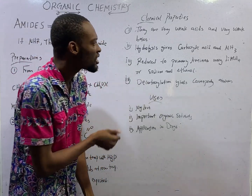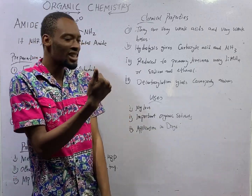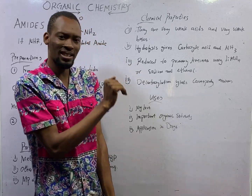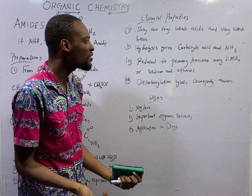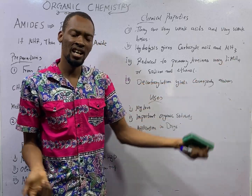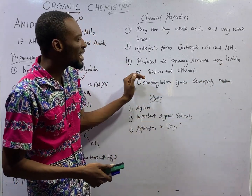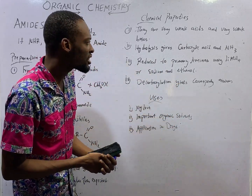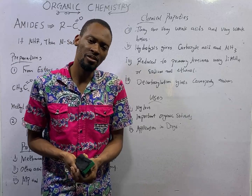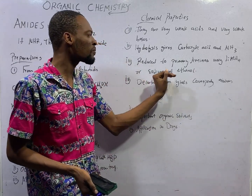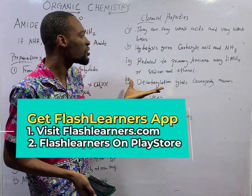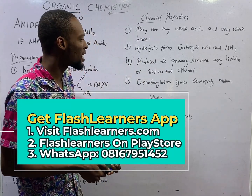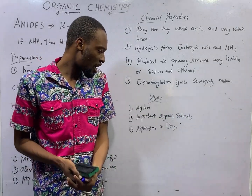Ladies and gentlemen, if carboxylic acid and ammonia give us amides and water, the reverse reaction — amides with water — is called hydrolysis, and that will give us carboxylic acid and ammonia. Amides are also reduced to primary amines. We can use reducing agents like lithium tetrahydroaluminate or sodium and ethanol to reduce amides to amines. The carboxylic acid will give us the corresponding amines.